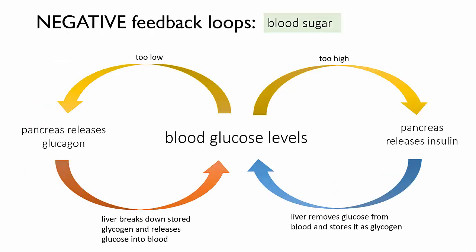What happens if one of those responses stops working? Diabetes is an illness that occurs when your body loses the ability to maintain homeostasis of blood glucose levels. The reason it happens is because the insulin side of the negative feedback loop is not working.